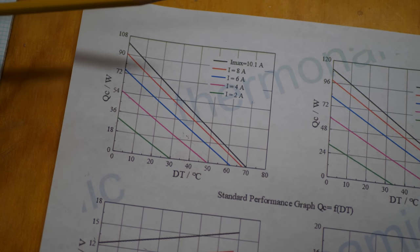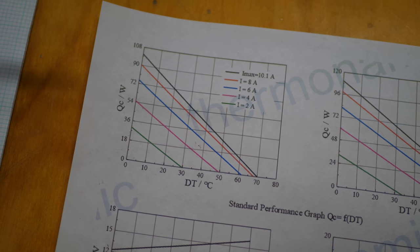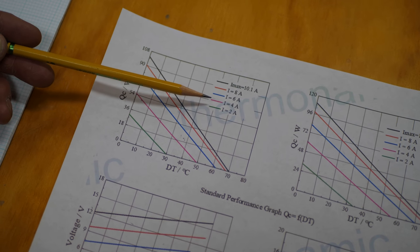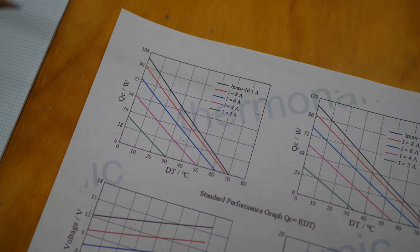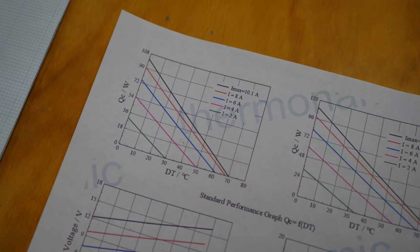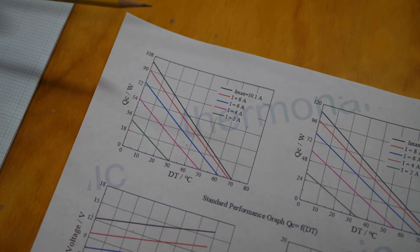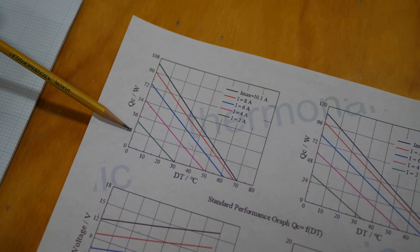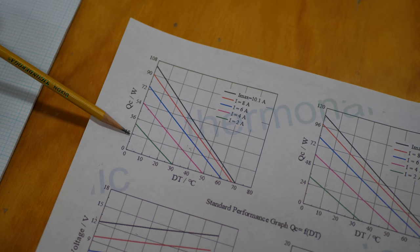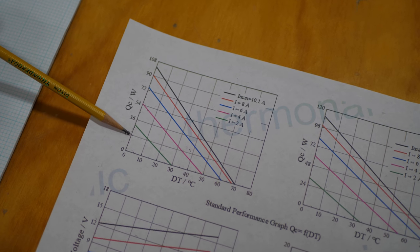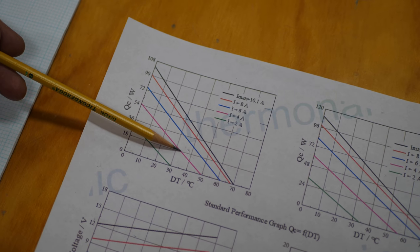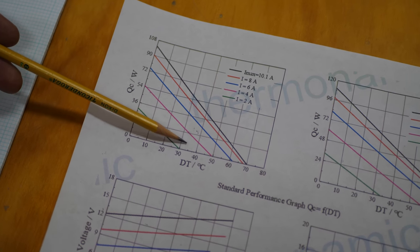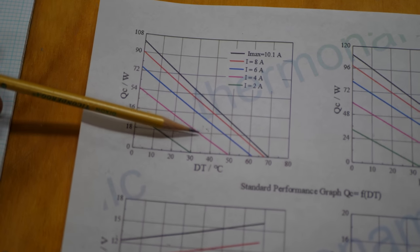Now if we were going to run these in series what we need to do is we need to start at some place and what we'll do is we'll start with the 4 amp line which is this pink line right here. Let's assume for a second that we're going to try to pump 18 watts out of this refrigerator or whatever we're trying to cool. So if we look at this 18 watt point on the heat pumping axis, the vertical axis, and we travel over to where the 4 amp line intersects, we'll see that we end up with a temperature differential there of somewhere around 33 degrees centigrade.